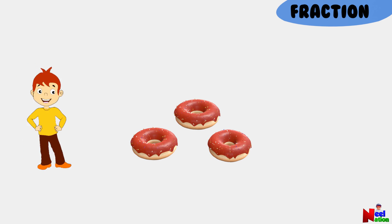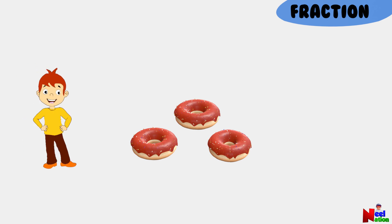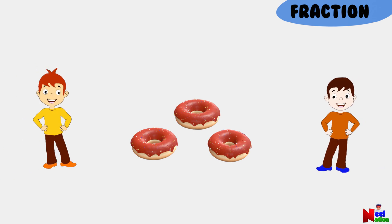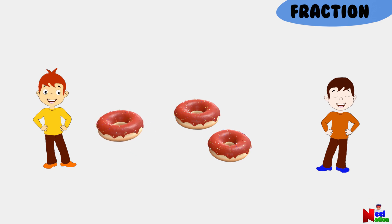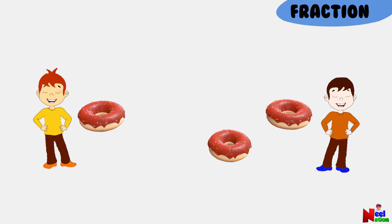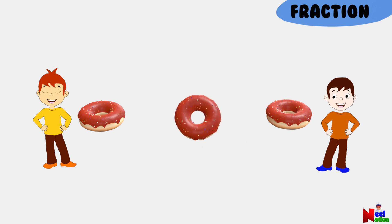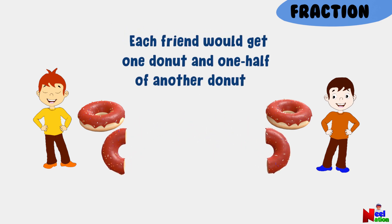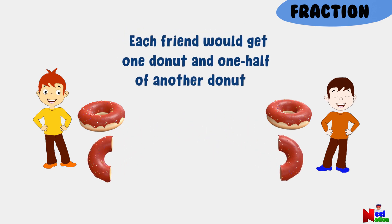Imagine you have three donuts and two friends. Can you tell how you would share three donuts equally among two friends? First, I will give each friend one donut. Then I would split the third donut into two equal halves. So each friend would get one and one half donuts. Awesome, that's right.